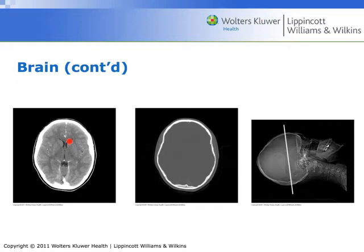Lateral ventricle — so it's the anterior horn of the patient's left lateral ventricle. This little bulge here is the caudate nucleus. The putamen, globus pallidus. Third ventricle. These dots on either side are the choroid plexus. Parietal bone. Internal occipital protuberance.